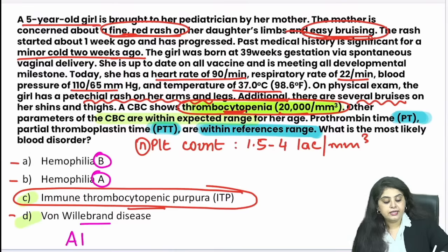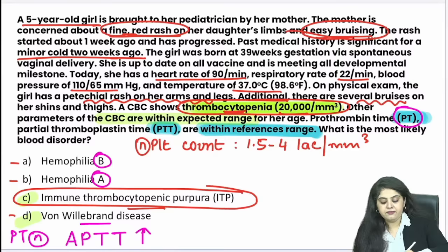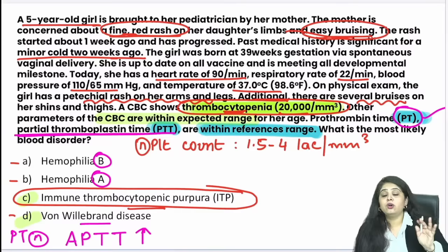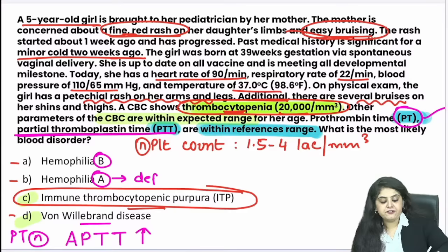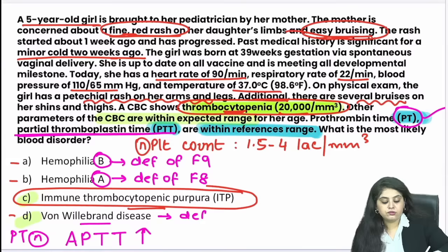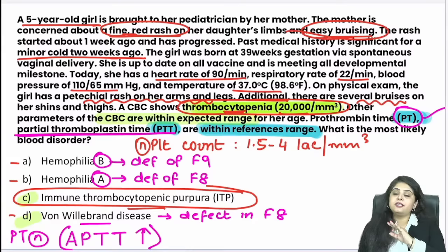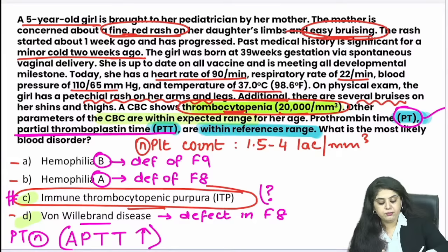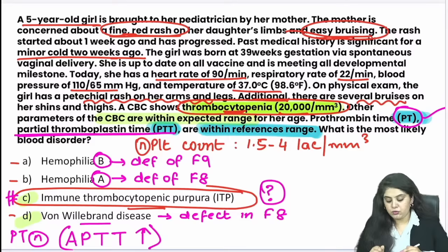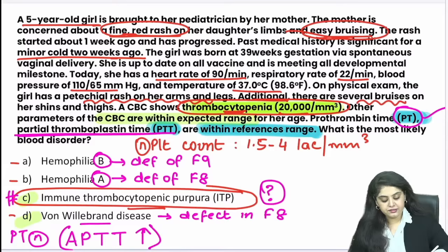Haemophilia A: deficiency of factor 8. Haemophilia B: deficiency of factor 9. Von Willebrand disease: also has a defect in factor 8. When factors 8 and 9 have a problem, APTT must be elevated. But here APTT is totally normal — only the platelet is the issue → ITP. My next question: is this acute ITP or chronic ITP?